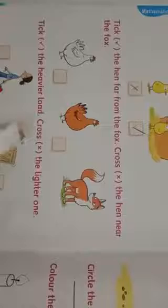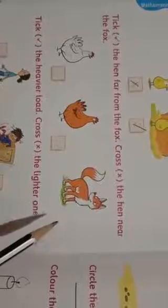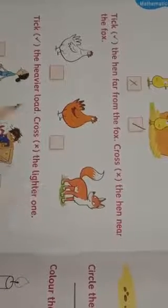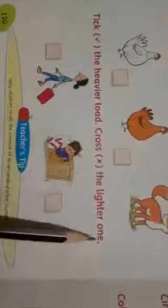Take the hen far from the fox and cross the hen near the fox. Then tick the heavier load, cross the lighter one.